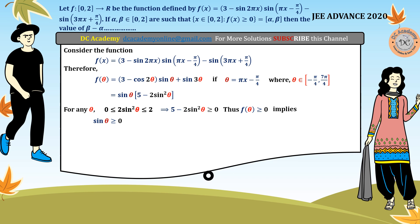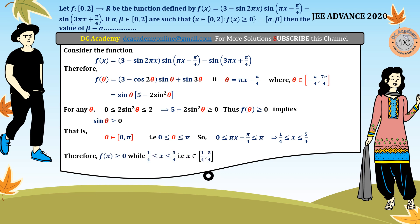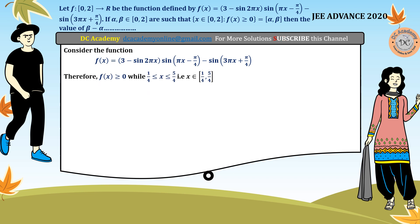sin(theta) ≥ 0 in the interval from -pi/4 to 7*pi/4 only when theta lies in [0, pi]. Since theta = pi*x - pi/4, the condition theta ∈ [0, pi] gives, adding pi/4 to both sides and dividing by pi, that x lies in [1/4, 5/4]. Both endpoints are included (closed interval).